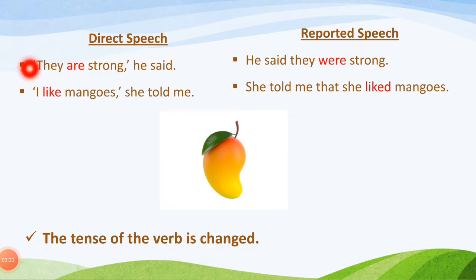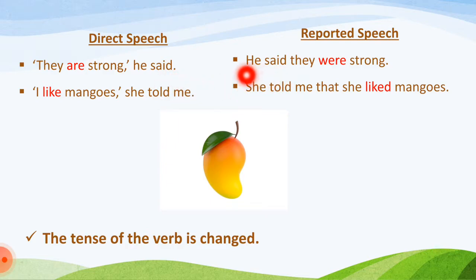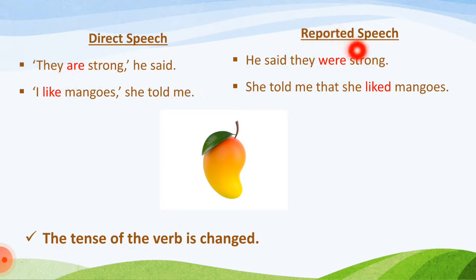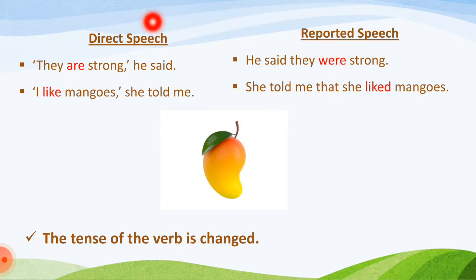Now apart from the basic differences of inverted commas and exact words, there are also other differences. In direct speech we say 'They are strong,' he said. In reported speech it becomes: he said they were strong. 'Are' is the present form of the verb whereas 'were' is the past form. So in reported speech the tense is changed.